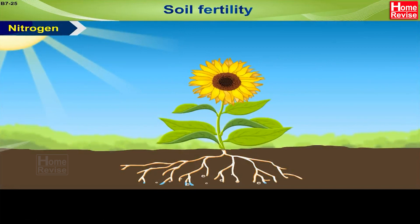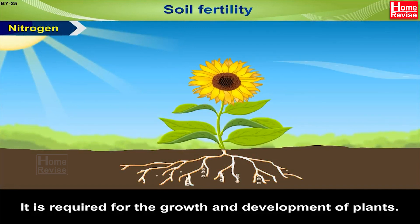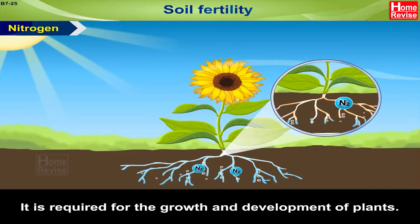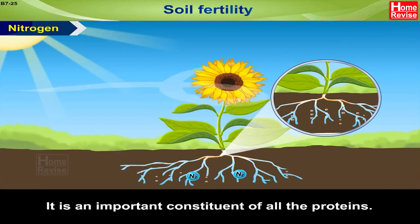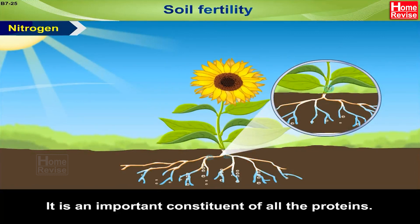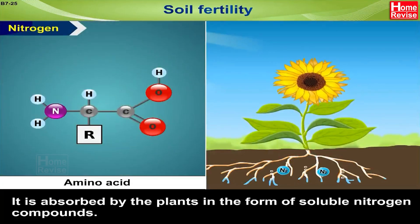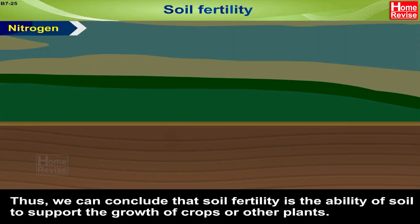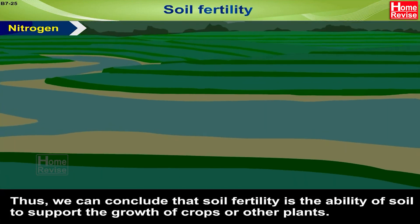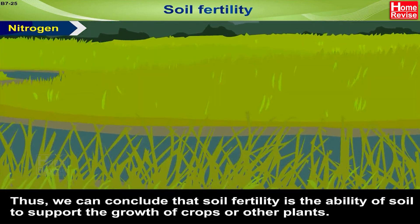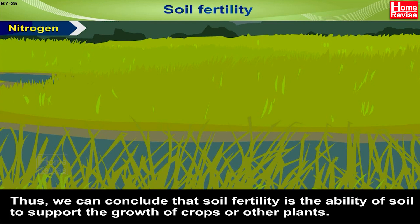Nitrogen is required for the growth and development of plants. It is an important constituent of all the proteins. It is absorbed by the plants in the form of soluble nitrogen compounds. Thus, we can conclude that soil fertility is the ability of soil to support the growth of crops or other plants.